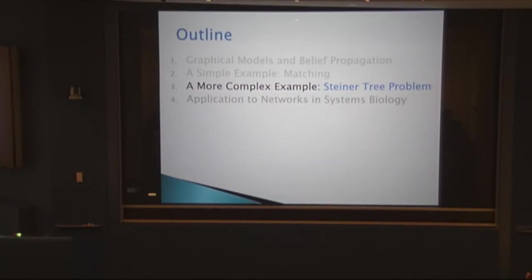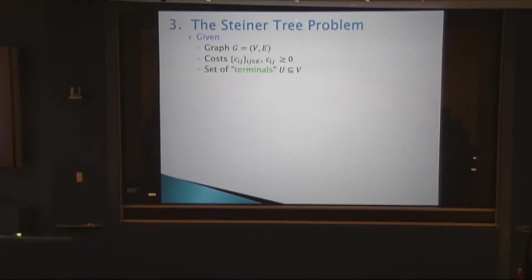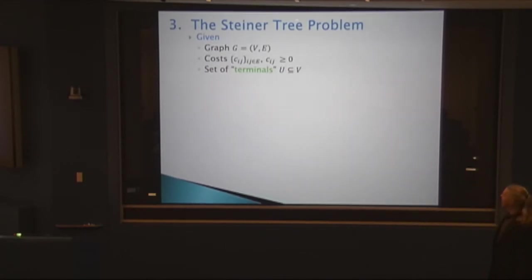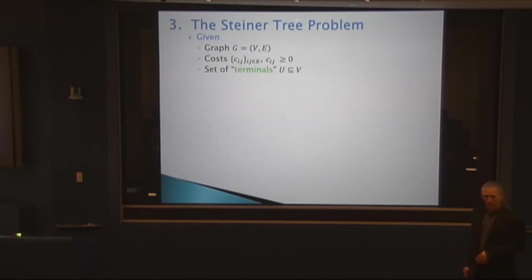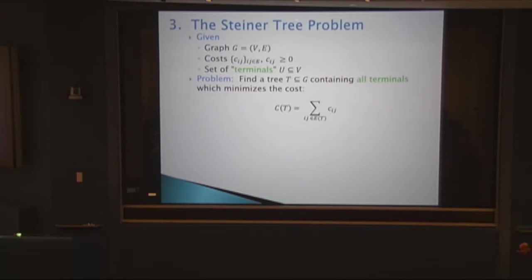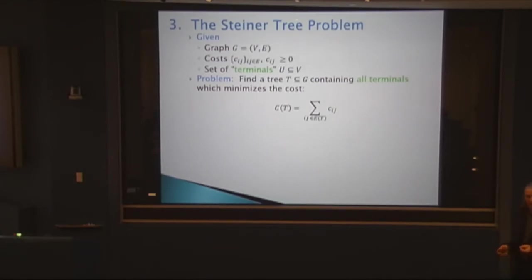Now I come to a problem very relevant for applications but for which we don't know much mathematically: the Steiner tree problem. You have a graph, costs on edges — think of it as the internet where costs represent transmission charges — and terminals where people want to watch a movie. We want to find a sub-network connecting all terminals with minimal cost. It must be a tree, since otherwise you could remove edges and pay less.